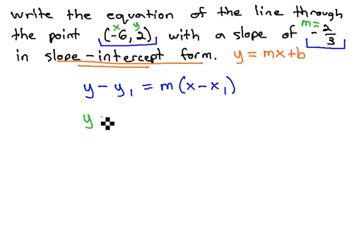So we have y minus y1, which is 2, equals m, or the slope of negative 2/3, times x minus x1, which is negative 6. Well, subtracting negative 6 is the same as adding positive 6, so I'm just going to write x plus 6.